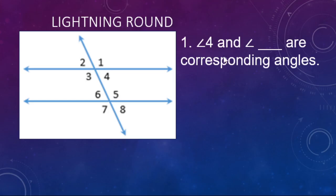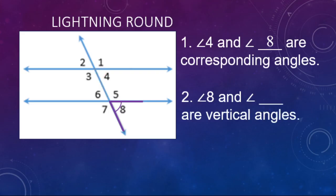Number one: angle four and angle blank are corresponding angles. There's angle four — on the other intersection, the angle in the same relative position is angle eight. They're both pointing in the same direction: corresponding angles. Number two: angle eight and angle blank are vertical angles. Vertical angles have rays pointing in opposite directions. Angle eight points down to the right, angle six points up to the left — so angle eight and angle six are vertical angles.